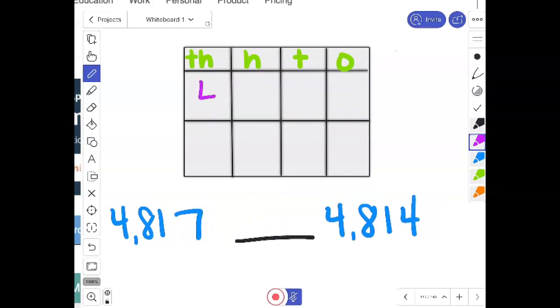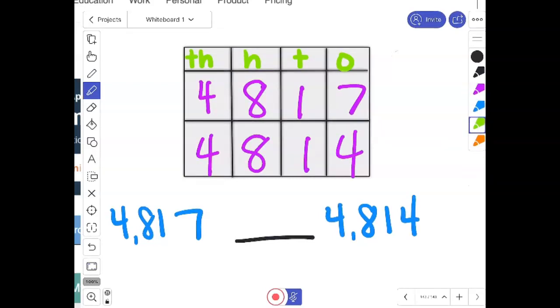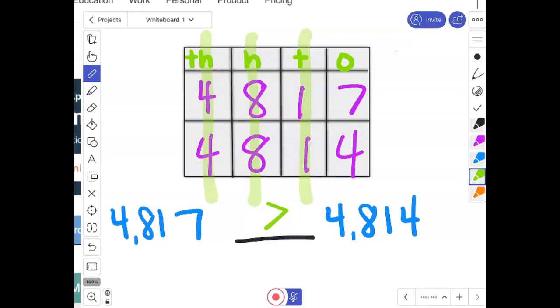Okay. 4,817 compared to 4,814. So I'm going digit by digit. You know what I'm going to do? I'm going to go like this. These are the same. So they kind of cancel each other out. It don't matter. These are the same. So they don't really matter either. These are the same. So they don't really matter. If I look at this, 7 is greater than 4. So 4,817 is greater than 4,814.